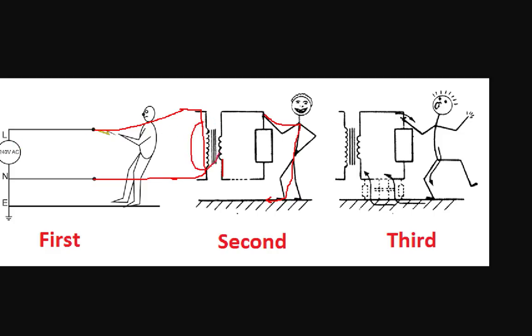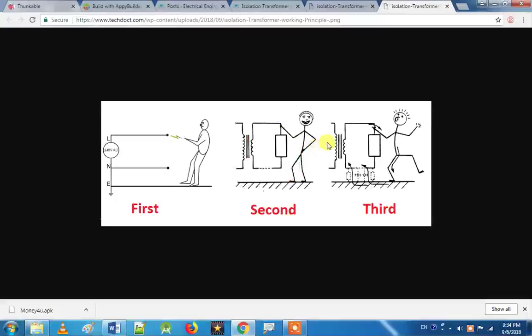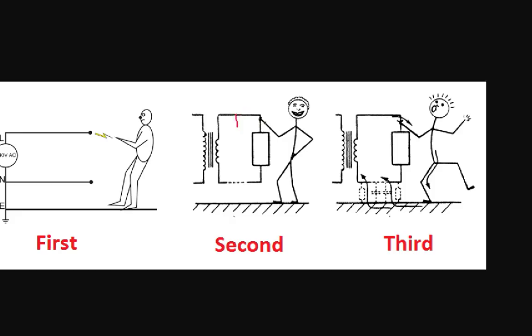The isolation transformer has 250V in this coil and in that coil. This coil is grounded, primary is neutral, secondary is also neutral. Without isolation, when we touch and there's a path to earth, current flows and we get a shock. With isolation, there is no direct ground connection on the secondary side. Now let's connect this device in parallel.